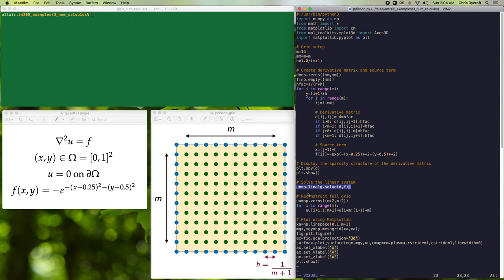For plotting purposes, we now construct a full representation of our solution on the m plus 2 by m plus 2 grid. So we construct an array uu that's of size m plus 2 and m plus 2. And we then copy the relevant entries of u into rows of our array uu, and we then plot the full uu array using matplotlib.